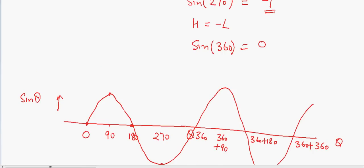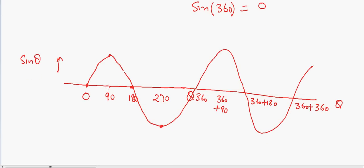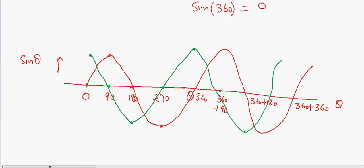Going back to the wave: wherever we have a maximum for sine, we need to have zero for cosine, and wherever we have zero for sine we have one for cosine. Drawing this cosine wave, it looks a little different from the sine wave — this is what is called a phase shift. By just moving from cosine to sine, I get a shift in the whole wave, and wherever the maxima was, now we have something different.